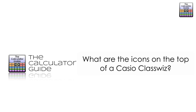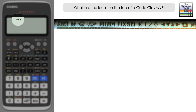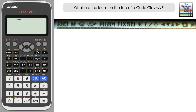Hello and welcome to the calculator guide video on what are the icons on the top of a Casio ClassWiz. You can see that I have the icons from the top bar on the screen of the ClassWiz highlighted here. On the actual calculator I've also got two that are already displayed. I'm going to progress from left to right whilst we have a look at all the icons, what they mean, and how you access them.